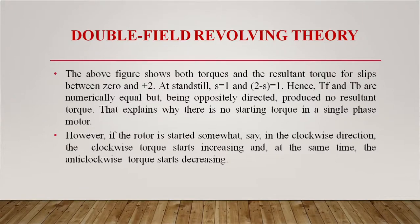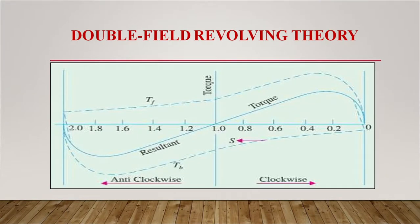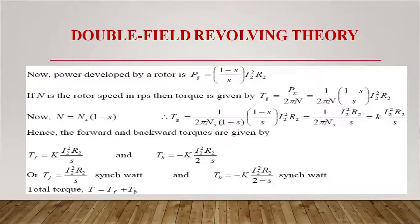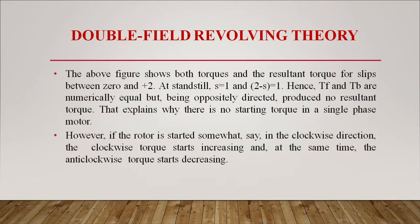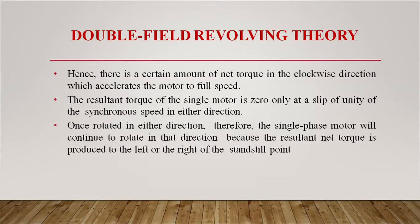The figure shows both forward and backward torques and the resultant torque for slip between 0 and +2. At standstill, s = 1 and (2 - s) = 1, so Tf and Tb are numerically equal but oppositely directed, producing no resultant torque — this explains why there is no starting torque in a single phase induction motor. However, if the rotor is started in the clockwise direction, the clockwise torque increases and anticlockwise torque decreases, producing a net torque that accelerates the motor to full speed.